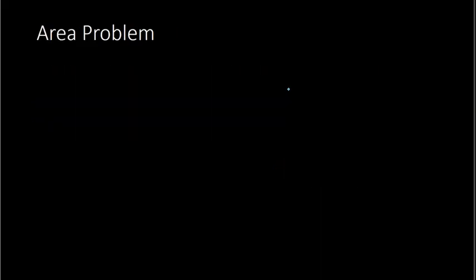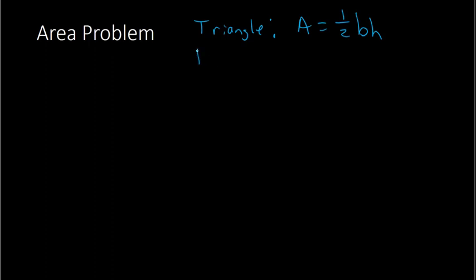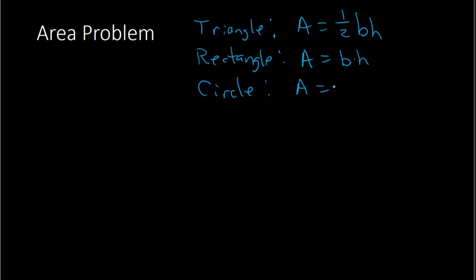The second type of problem deals with area. When you deal with area, you need to know your area formulas. For a triangle, the area is one-half times base times height. For a rectangle — and actually any parallelogram — the area formula is base times height. And for a circle, the area is pi times the radius squared. These are the three main ones.